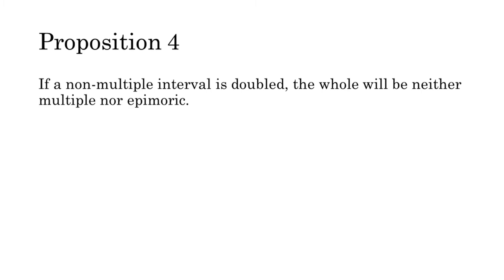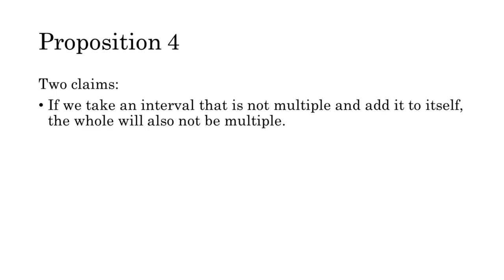If a non-multiple interval is doubled, the whole will be neither multiple nor epimoric. The last proposition was a bit of a doozy, but you can relax now. This one is quite a bit simpler, and it might even seem obvious in light of what we've already learned. Proposition 4 makes two claims. First, it claims that if we take an interval that is not multiple and add it to itself, the whole will also not be multiple. This seems to follow obviously from Proposition 2. We proved that only multiple intervals will make a multiple whole when doubled; it follows that if we double an interval that's not multiple, it must make a non-multiple whole.